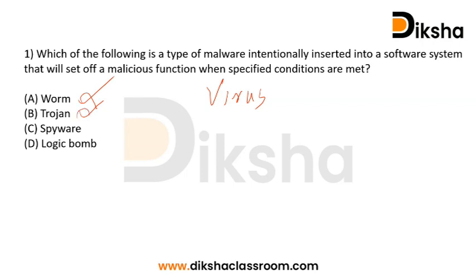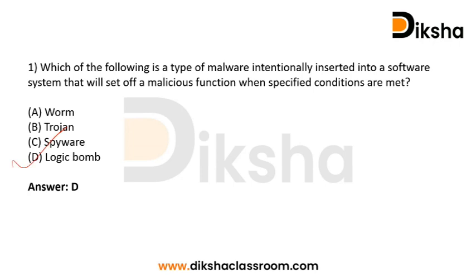Trojan is also not the answer. Spyware is unwanted software that infiltrates a computing device, stealing internet usage data and sensitive information — so spyware is also not the correct answer. Logic bomb is a piece of code intentionally inserted into an operating system or software that implements a malicious function after a certain amount of time or when specific conditions are met. That matches the question exactly, so the correct answer is option D - logic bomb.